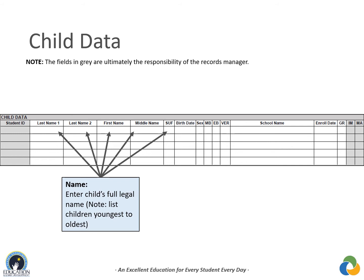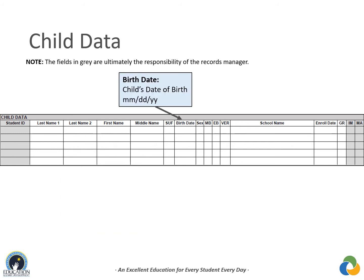First name is the legal first name — do not record nicknames or shortened names. Middle name is the legal middle name; multiple middle names can be entered in the web system, but if space is insufficient, list only the first middle name in the field and include all middle names in the comments section. Suffix records the child's generational designation, such as Junior or the Third. The birthday column records the month, day, and year the child was born using two-digit numbers — for example, July 22, 2018 is written as 07/22/18.